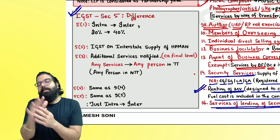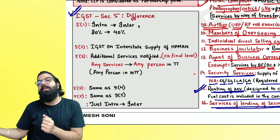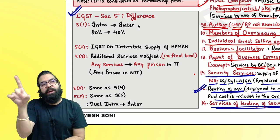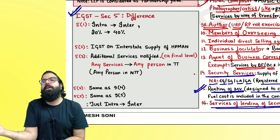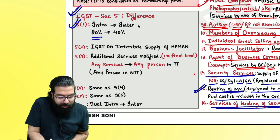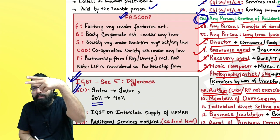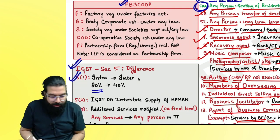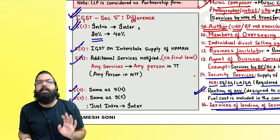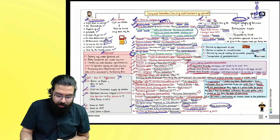For the IGST Act: CGST levy section is section 9, and section 9(1) applies to intrastate supply. Similarly, IGST section 5(1) applies to interstate supply — CGST is levied on intrastate, IGST on interstate. The 20% cap in CGST becomes 40% in IGST because IGST is CGST plus SGST put together. The rest of sections 5(1), 5(2), 5(3), 5(4), and 5(5) are the same — the only difference is 'intra' becomes 'inter'.